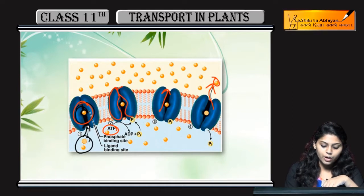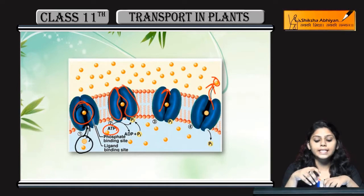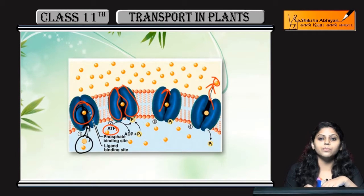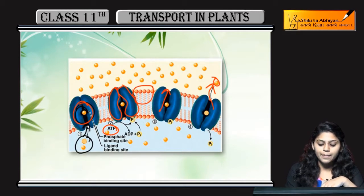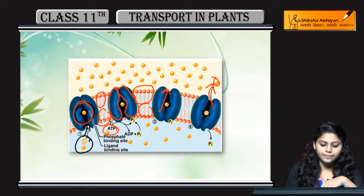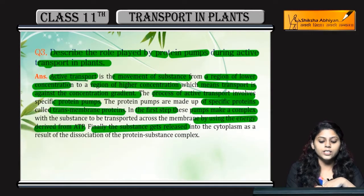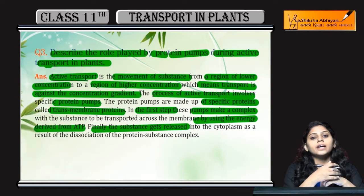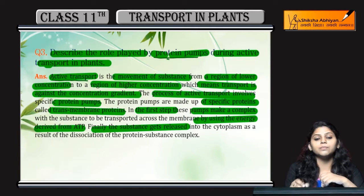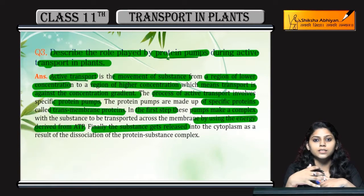Movement hogi to the outer side, then substance release ho gaya. Ye jo blue color mein dikh raha hai, ye hain protein pumps. Ye transmembrane proteins hain — transmembrane kyun kehete hain? Because ye membrane ke beech mein hote hain, transmembrane structure hote hain. So, active transport hota hai against the concentration gradient, aur protein pumps active transport karate hain substances ki.